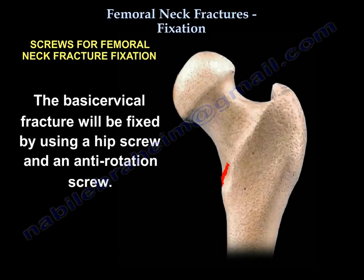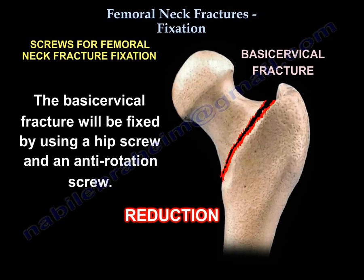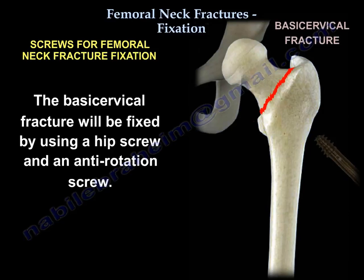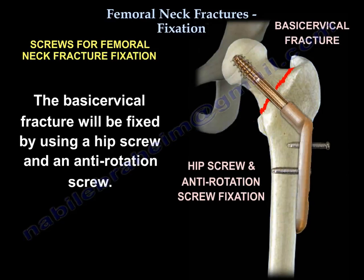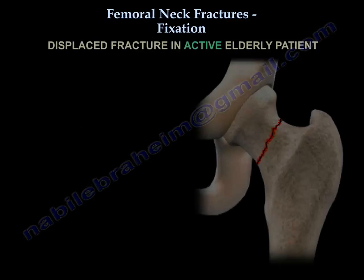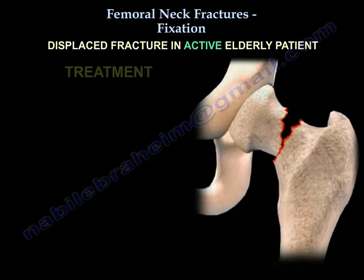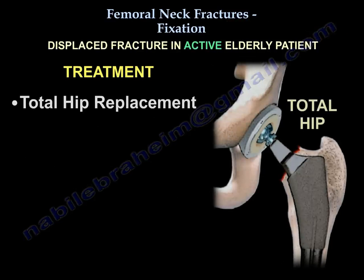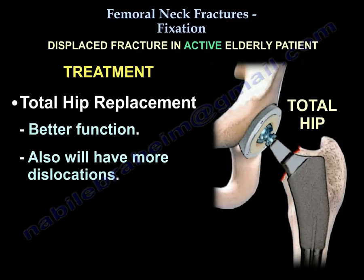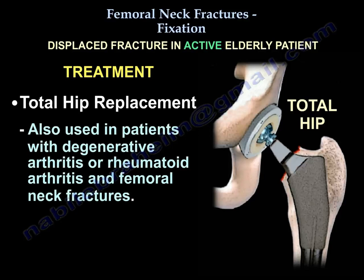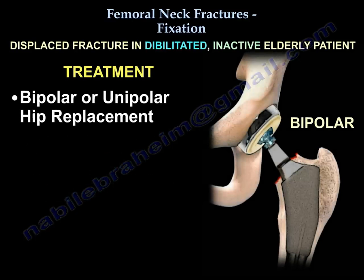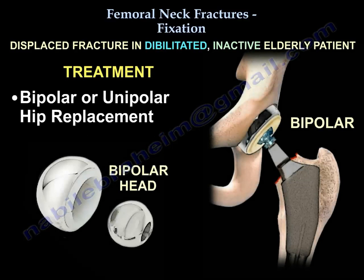A basal cervical fracture will be fixed with a hip screw and an anti-rotation screw. A displaced fracture in an active elderly patient will be treated by total hip replacement, which provides better function but carries a higher risk of dislocation. Total hip replacement is also used in patients with degenerative arthritis or rheumatoid arthritis and femoral neck fractures. A displaced fracture in a debilitated elderly patient will be treated with bipolar or unipolar hemiarthroplasty.